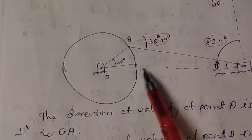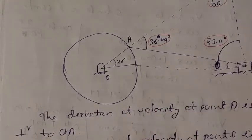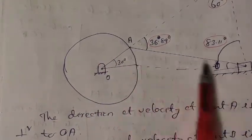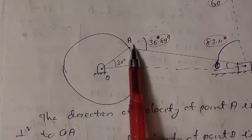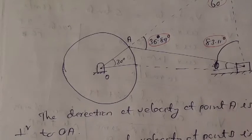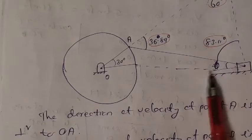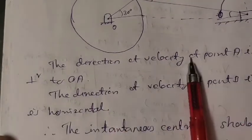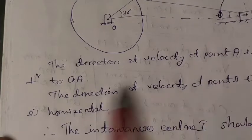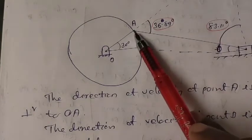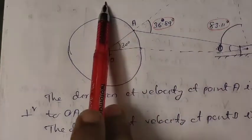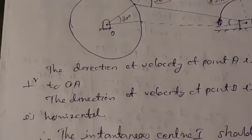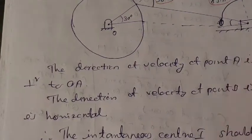Most of you know how the crank and piston work — the crank rotates continuously and moves the connecting rod, which in turn moves the piston horizontally. The direction of velocity at point A is perpendicular to OA, which is the radius. The direction of velocity of B is horizontal only, not vertical.